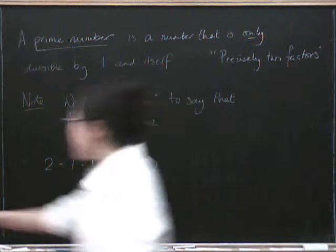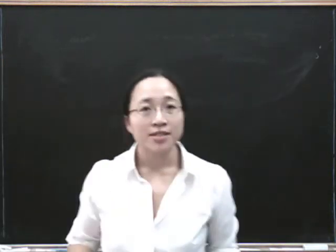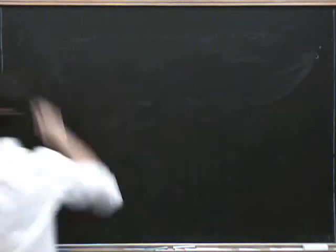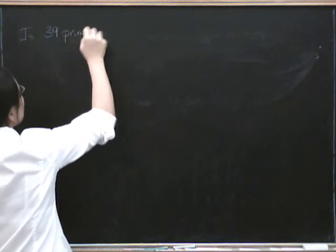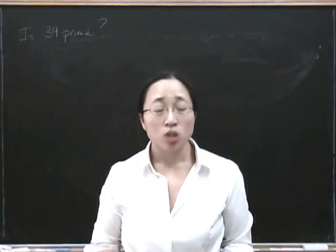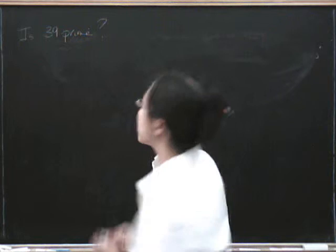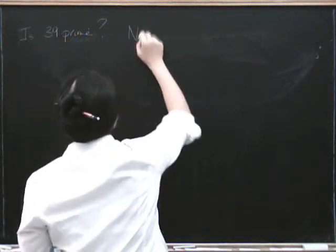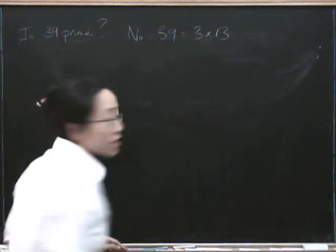So if I say to you, is the number 39 prime? Well, the obvious way of checking to see if 39 is prime is to see if it has any non-trivial factors. So we can just go through and test. Well, 39 isn't divisible by 2. Is 39 divisible by 3? Ah yes, 39 is divisible by 3. So the answer is no, because 39 is 3 times 13.